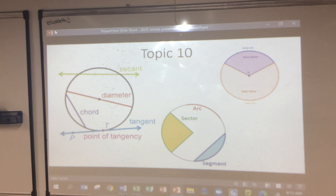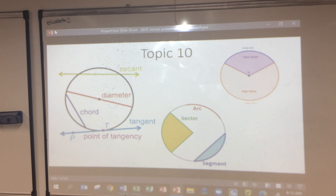The word 'line' means it continues in both directions forever, so we put a double-headed arrow here. A ray is a line with a definite starting point that continues in one direction forever.